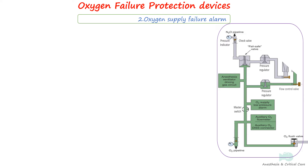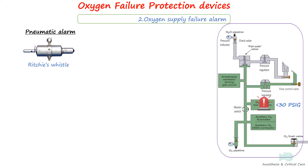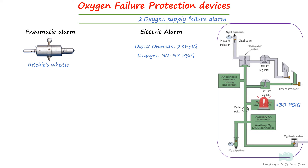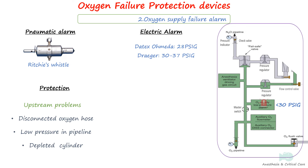The machine standard also specifies that whenever oxygen supply pressure falls below a manufacturer-specified threshold — usually 30 psig — a medium-priority alarm shall sound within 5 seconds, and it should not be possible to disable this alarm. Older alarms like Ritchie's whistle used a pressurized canister filled with oxygen; when oxygen pressure fell below a certain value, the alarm directed the oxygen stream through the whistle. Modern machines employ pressure-operated electric alarms, with Datex Ohmeda triggering at 28 psig and Draeger at 30 to 37 psig. The alarm helps prevent hypoxia caused by problems such as a disconnected oxygen hose, low pipeline pressure, or depletion of the oxygen cylinder.